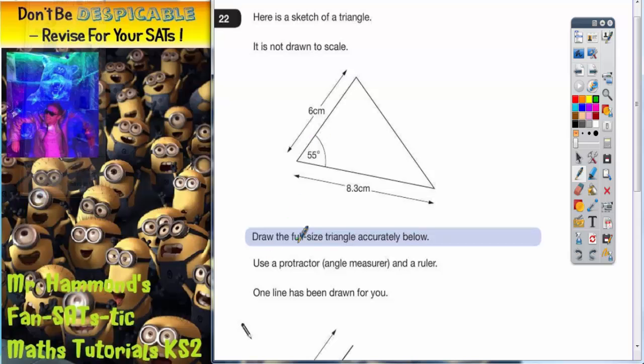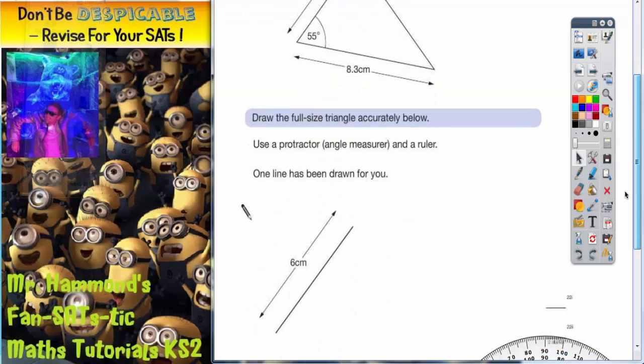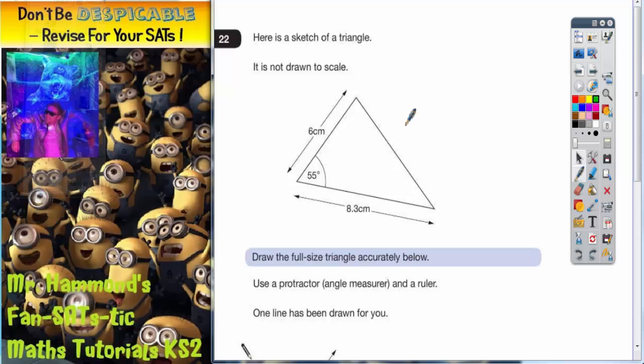So what we've got to do is draw the full size triangle accurately below. Well, we've already got a 6cm line, so this bit is already done for us, so that bit we can tick off.